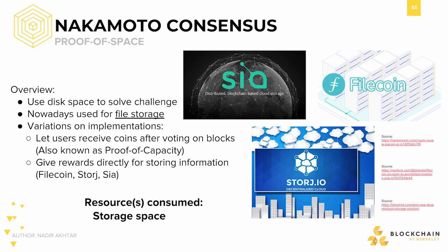Another novel category of Nakamoto consensus is proof-of-space, which consumes storage space as a limiting resource for voting power. Proof-of-space is seen by some to be more fair and energy efficient than proof-of-work, due to the availability of storage and its lower energy cost. Nowadays, proof-of-space is used primarily for file storage rather than as an implicit voting mechanism, though implementations vary. There are protocols that give rewards directly for storing information, such as Filecoin, Storj, and SIA. Proof-of-capacity is a type of proof-of-space very similar to other Nakamoto consensus mechanisms — instead of proving work or staking coin, you show that you've solved a problem involving a non-trivial amount of storage capacity, then propose the next block and receive coins. In a sense, proof-of-capacity can be seen as a memory-hard proof-of-work protocol, and all such systems use some sort of proof-of-space to limit users' influence on the system.